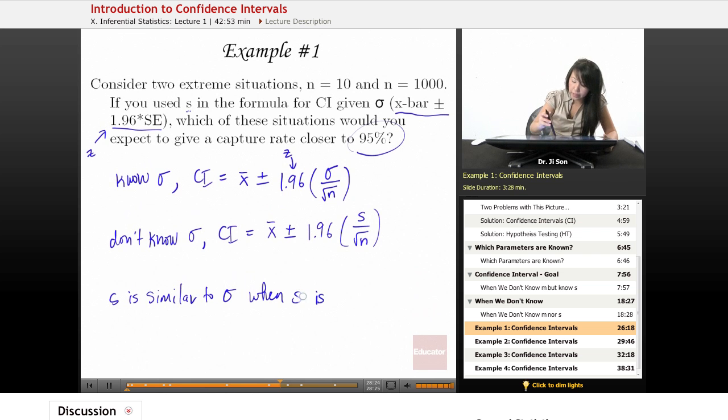S is similar to sigma when, sorry, when N, when sample size is large. So this situation would give you, even if you plugged in S here, a very close capture rate to 95%. These would be very similar.